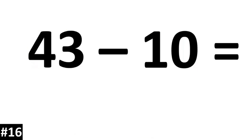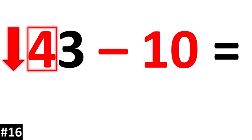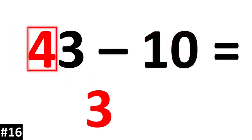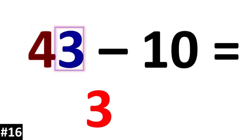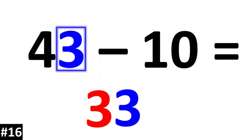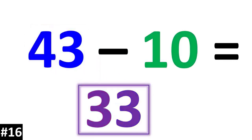43 minus 10. The 4 is going to go down to 3. The other number stays the same, so 43 minus 10 is 33.